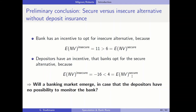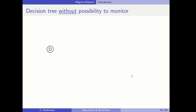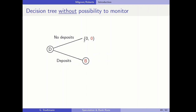The big question is: will a banking market emerge if depositors have no possibility to monitor the bank's investment behavior but are able to anticipate it? Let's model this as a decision tree. In the first step, depositors decide whether to give deposits to the bank or not. In the second step, the bank opts for the secure or insecure alternative. The payoffs in different parts of the decision tree are shown, with black numbers representing the expected payoff for depositors and red numbers the expected net value for the bank.